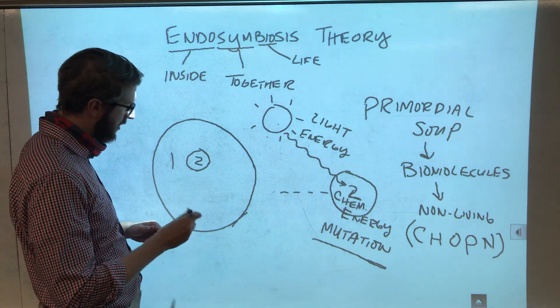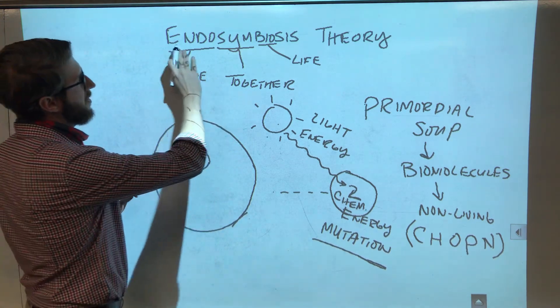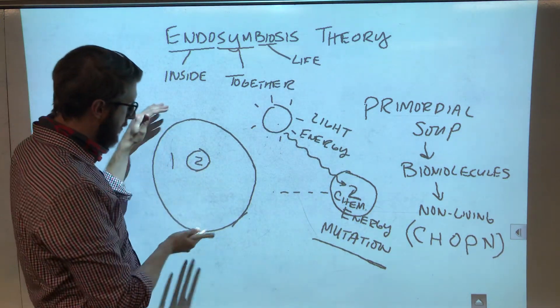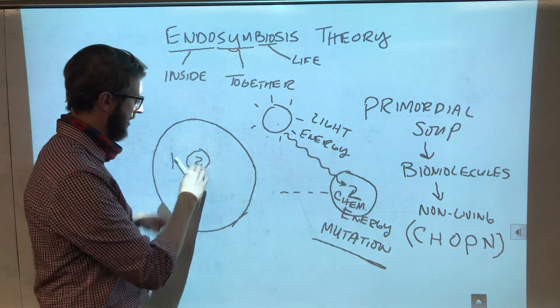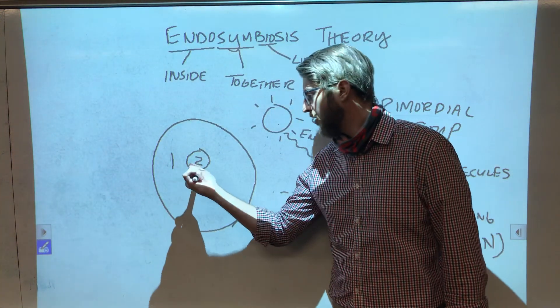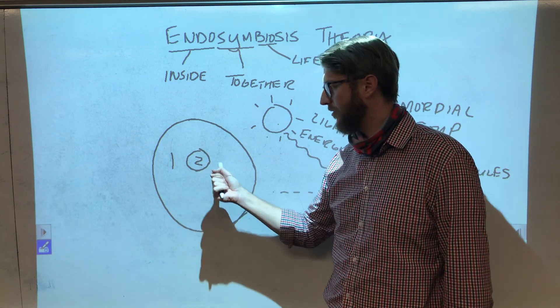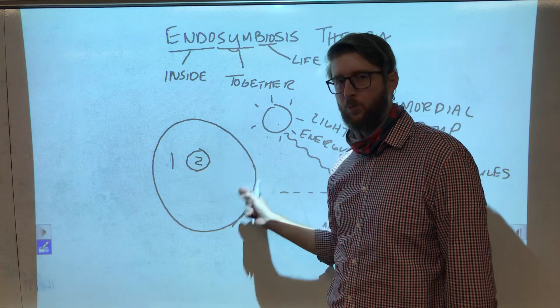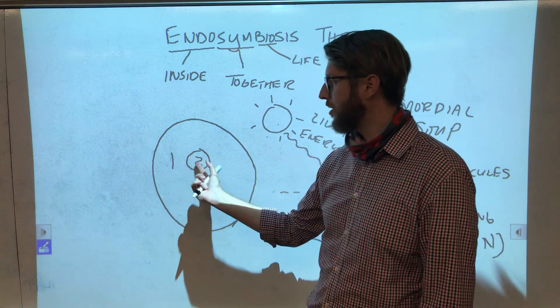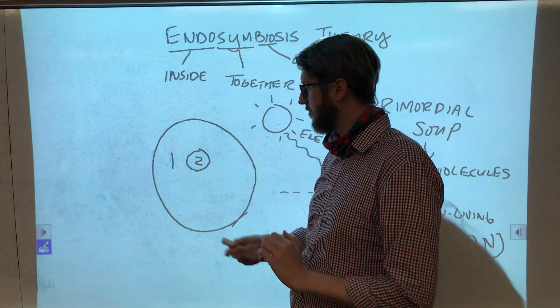And so the two actually end up living together, and they co-evolve over time to the point to where little cell two actually becomes part of big cell one. And this is really the endosymbiosis theory in a nutshell, that big cell ingested a small cell at some point throughout history. And that small cell was not digested, had some sort of a beneficial effect on cell one, to the point to where it actually benefited both to be with each other more so than if they were separate.